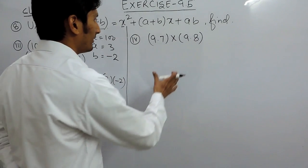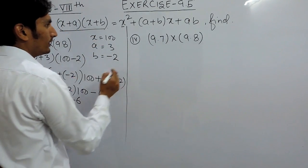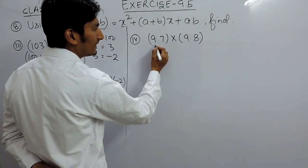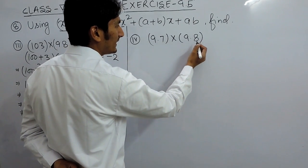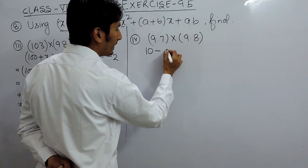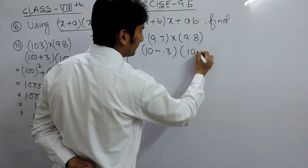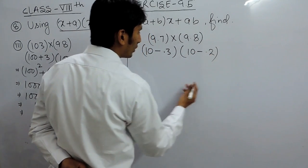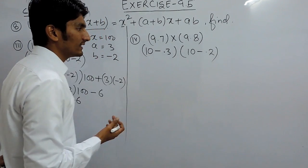Similarly, if I have to solve this, first I have to convert this into the proper form. Instead of writing this as 9 plus 0.7 and 9 plus 0.8, it's better to write this as 10 minus 0.3 and 10 minus 0.2, because solving numbers with 10 is easy.